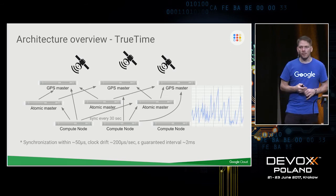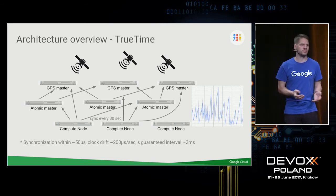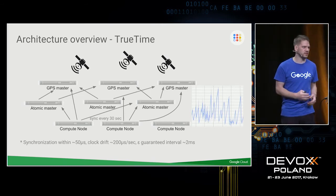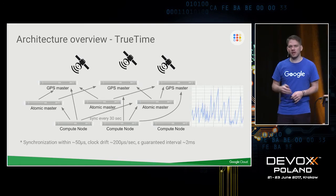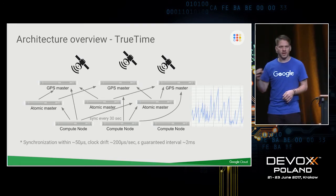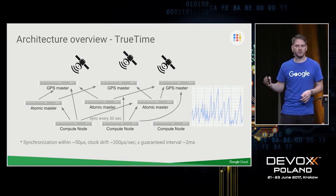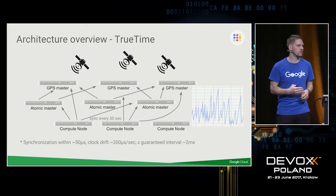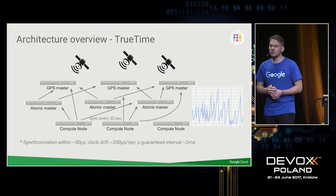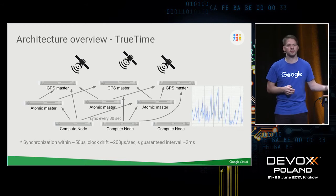What happens if the entire timing system in a data center fails? In that case, we get a true timestamp from a different data center and calculate in the travel time. All our networks are owned by Google, so we can make very good estimates of how long something travels between data centers. We calculate in that latency for the true timestamp, and Spanner basically slows down but won't stop.